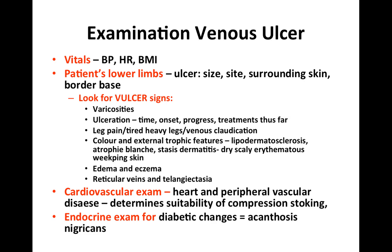Look for varicosities, ulceration, leg pain, colour, and external trophic features, oedema, eczema, reticular veins, and telangiectasias. You would also want to perform a cardiovascular exam to assess for peripheral vascular disease, as this determines the suitability and degree of compression stockings needed. An endocrine exam is also warranted if they have diabetes mellitus — look for changes such as acanthosis nigricans, which is a dark discolouration and thickening of the skin at the axilla and antecubital fossa.